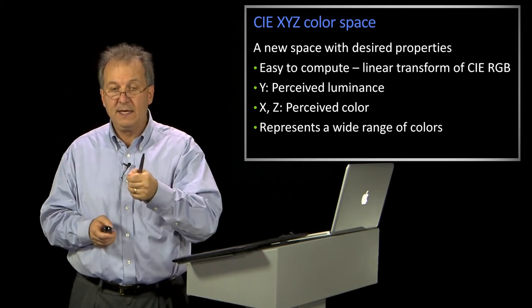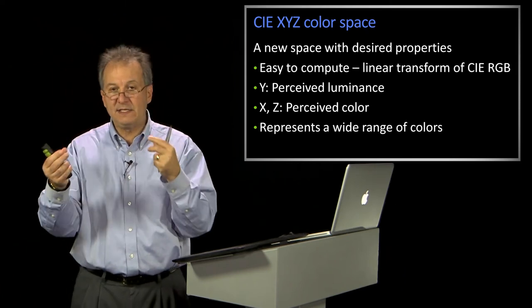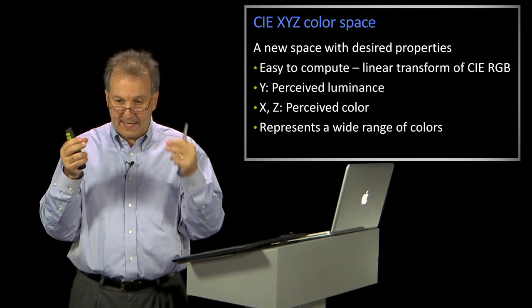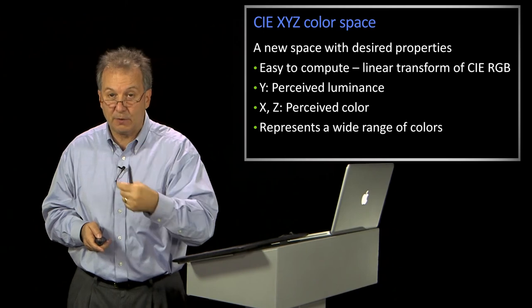The idea is that Y is the luminance, and then X and Z were two other quantities with which you, between X, Z, and Y, could figure out the color.